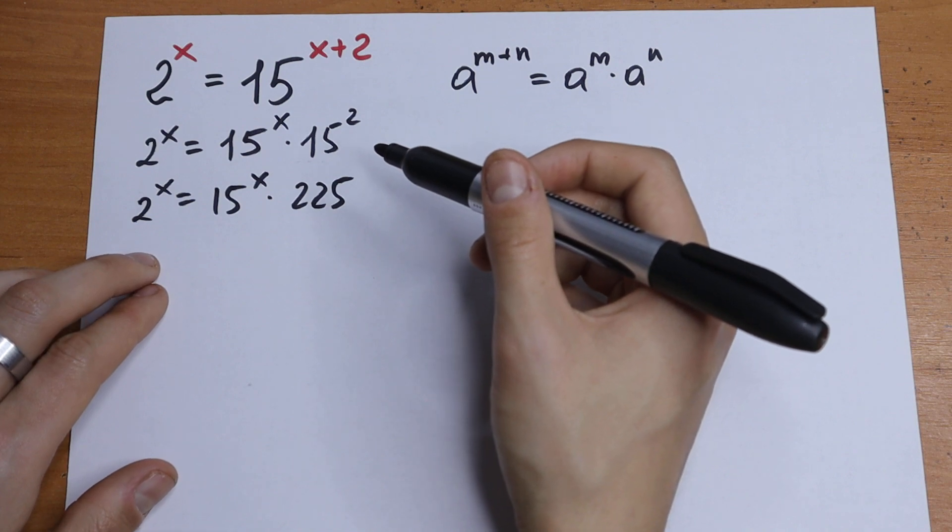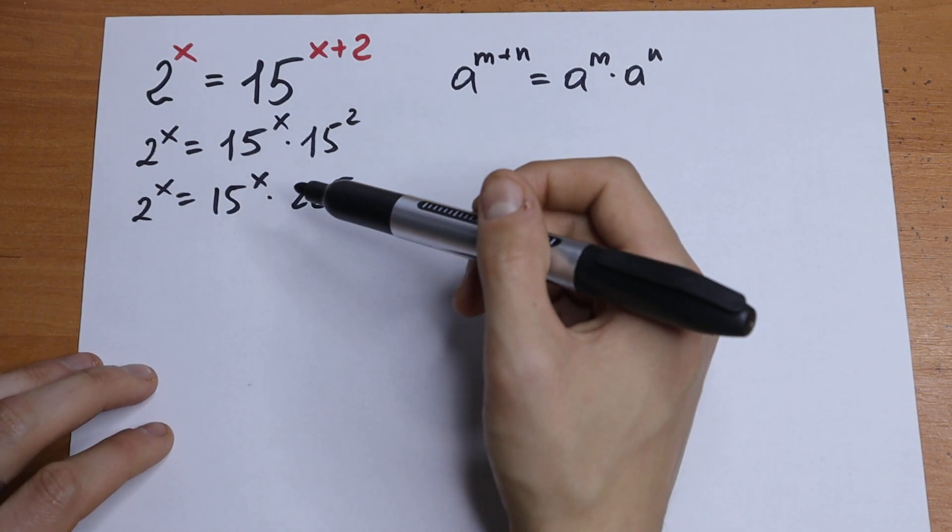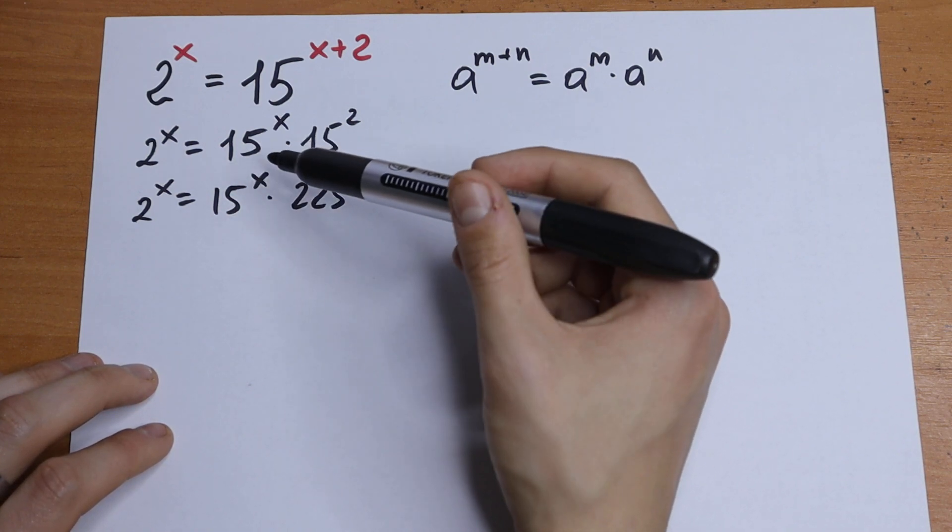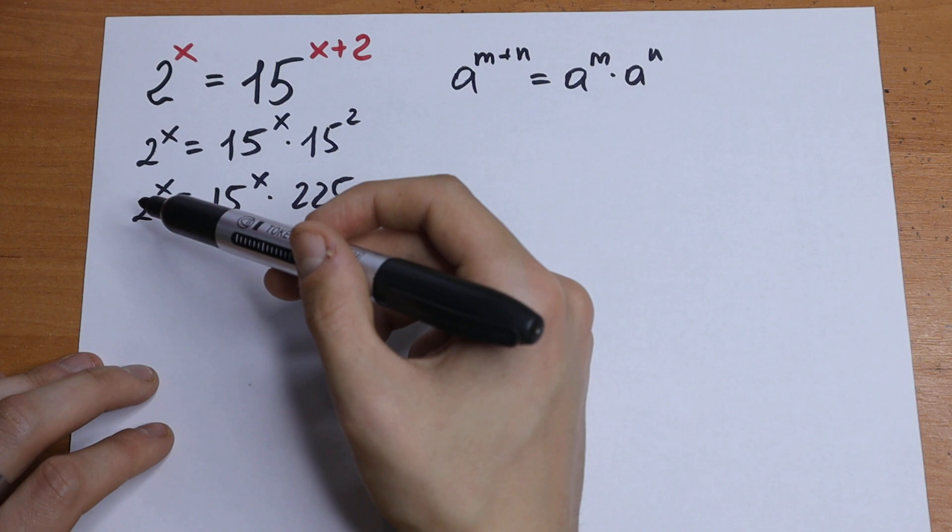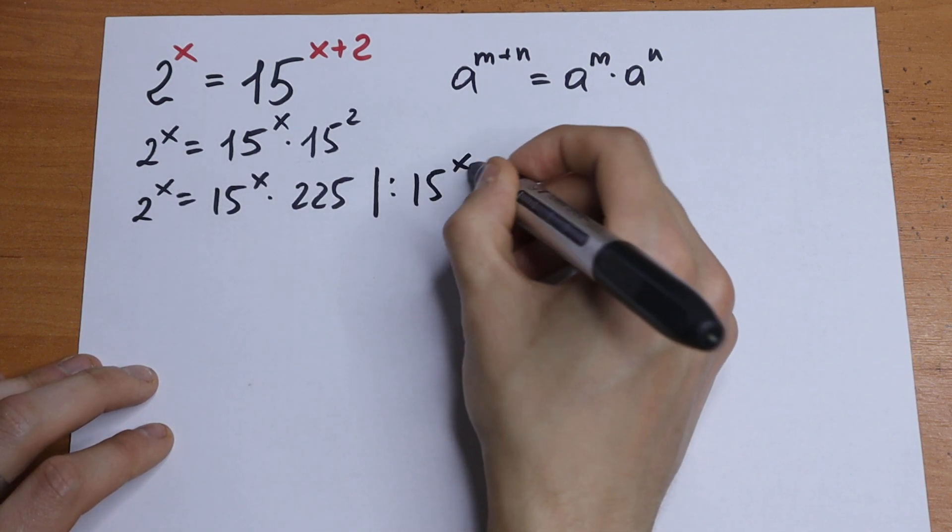A really good case right here, because if we have an exponential equation like that, we divide both sides by, for example in our case, let's divide both sides by 15 to the power x, but you can divide it by 2 to the power x, doesn't matter, so let's divide both sides by 15 to the power x.